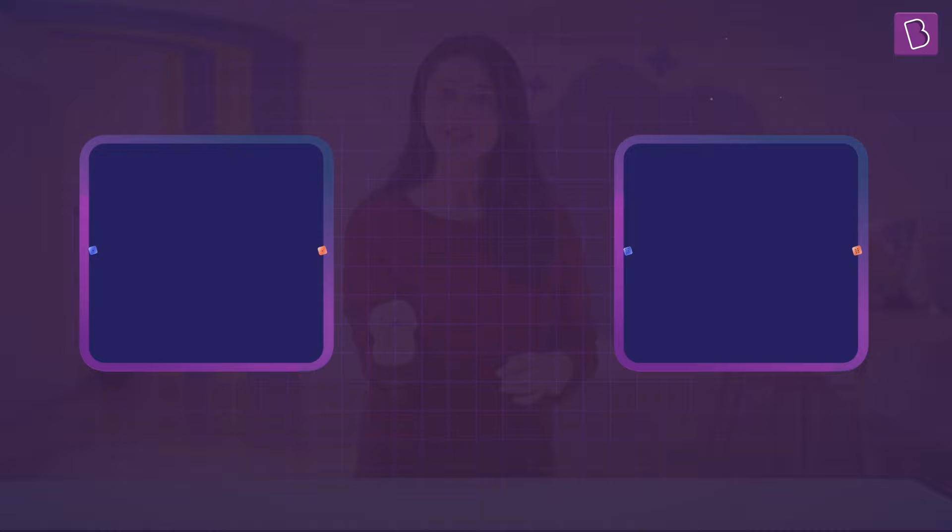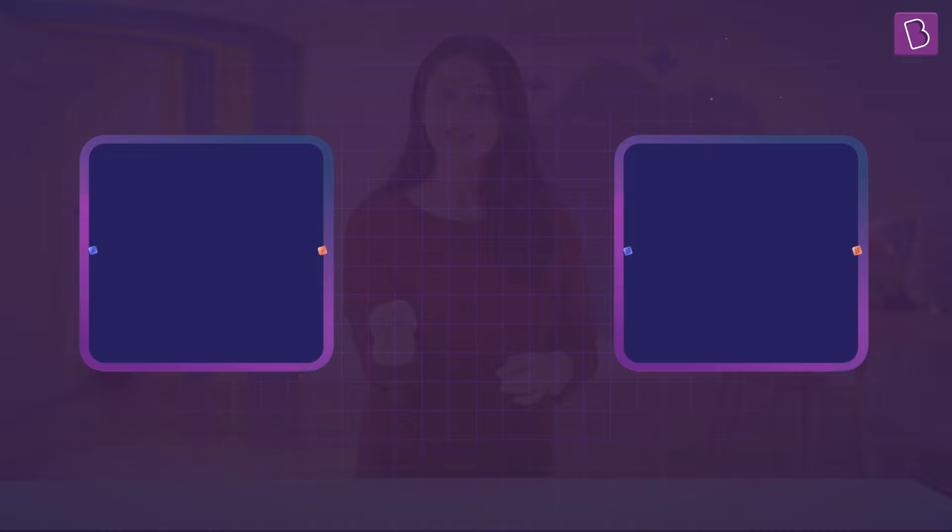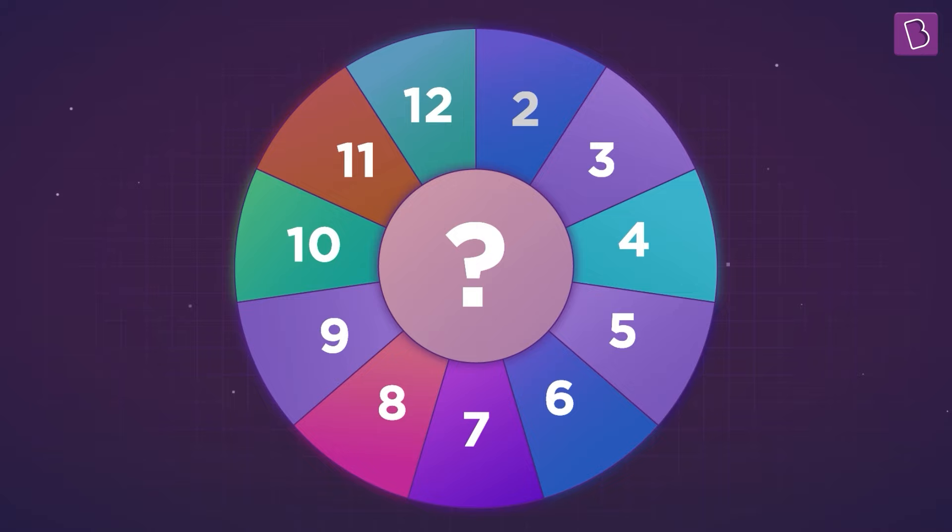But, what about rolling two dice? Which can give us anything from two to twelve? Will it be equally likely to get any number from two to twelve? Let's find out.